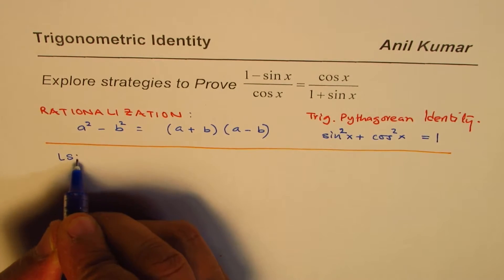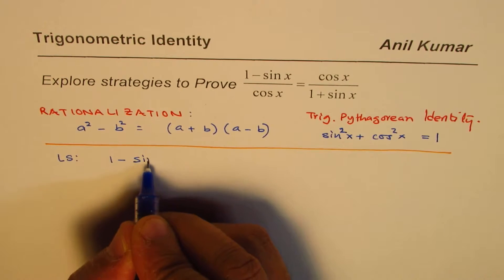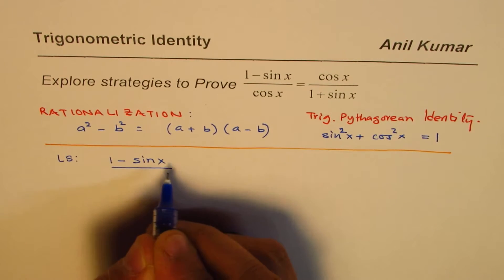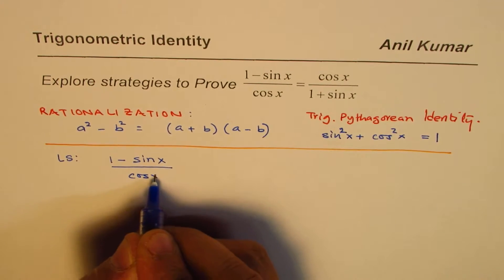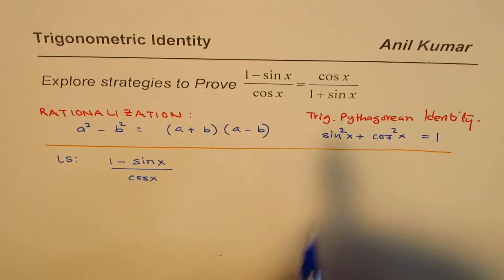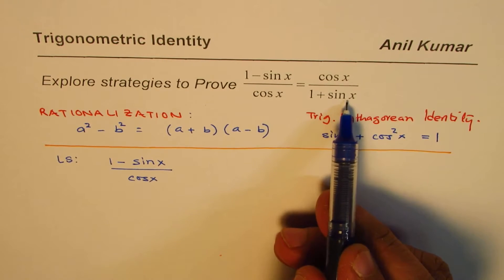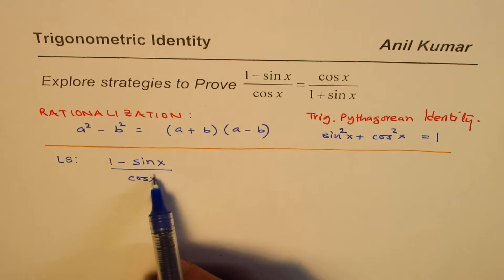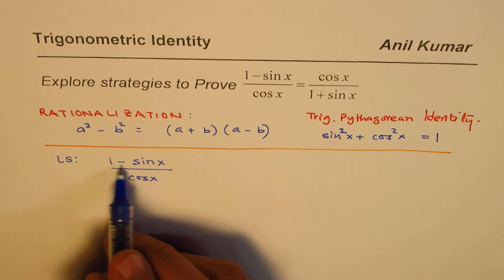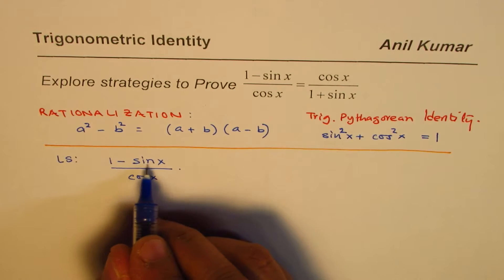Which is (1 - sin x)/cos x. Now if you see, the right side has got 1 + sin x, so we can rationalize the numerator 1 - sin x. That means multiply by its conjugate.